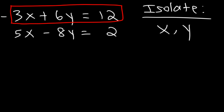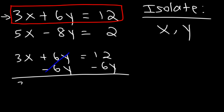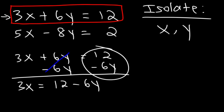I'm going to use the first equation and focus on solving for x. The first thing I'm going to do is subtract both sides by 6y. In order to isolate x, I need to get it by itself on the left side. If we subtract both sides by 6y, we get 3x is equal to 12 minus 6y. You can't combine these because they're not like terms.